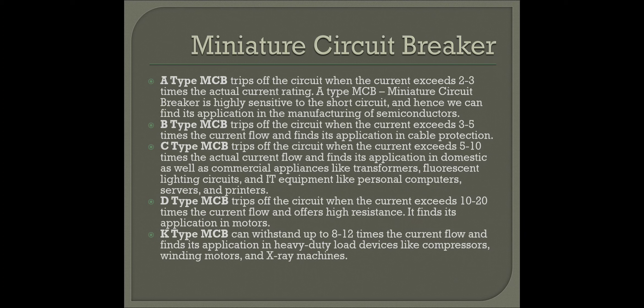B type MCB is a type of circuit breaker. It trips when the current exceeds 3 to 5 times the current flow and finds application in cable protection.